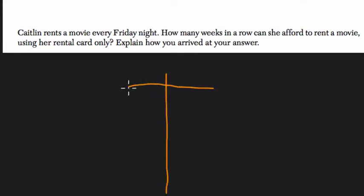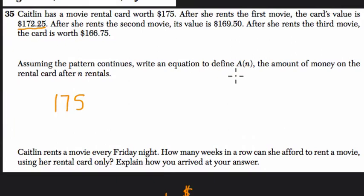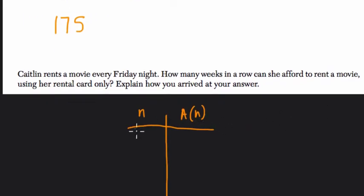Alright, so I'm going to make a little table down here. Let me set up a table where we have... let's look at the values they give us. A of n is the amount of money on the rental card, so let's call the output A of n. That's the amount of money on the card, and n is the number of movies you rent, because the number of movies you rent alters the amount of money you have on your card.